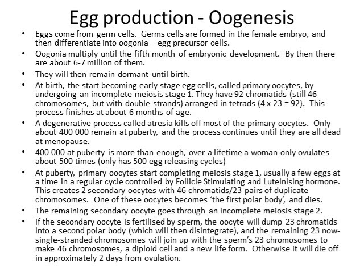As soon as primary oocytes form, they start dying off through a degenerative process called atresia. A female only has about 400,000 primary oocytes at puberty. This process of atresia carries on all the way to menopause, so the vast majority of potential egg cells a woman will ever have just die off unused. That 400,000 at puberty is more than enough though, because on average a woman only ovulates about 500 times over her life.